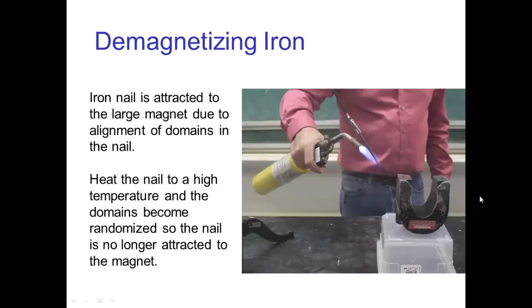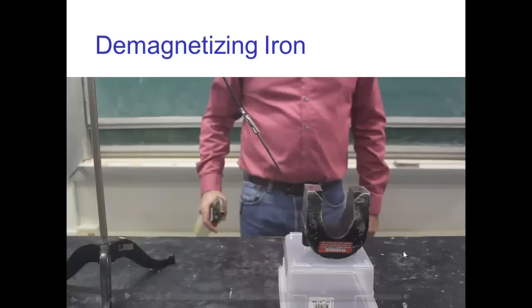Now, it's also possible to scramble those magnetic domains. And the easiest way to do that is by raising the temperature which produces a lot of random molecular motion and that will demagnetize a piece of iron.